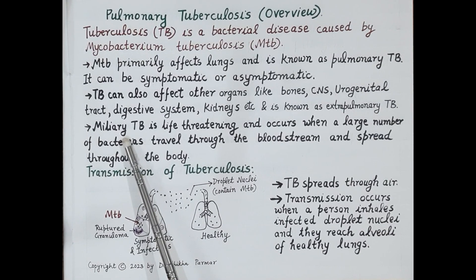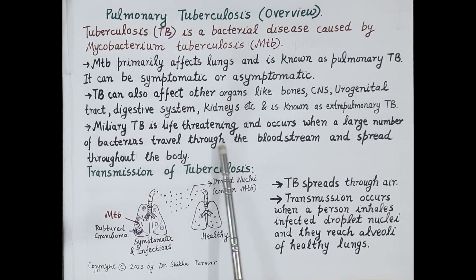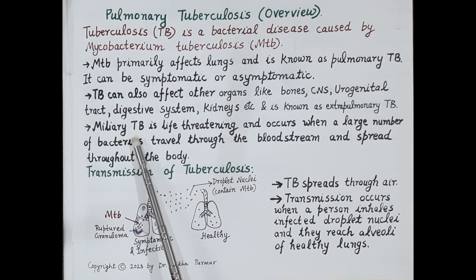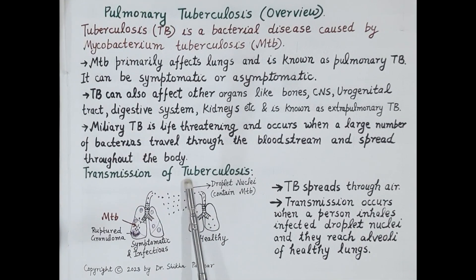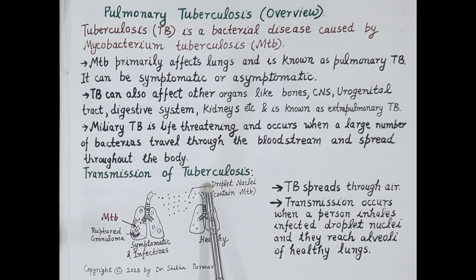In miliary TB, millet-sized tuberculosis lesions are seen in all the organs of the body. It occurs when a large number of tubercle bacilli reach the blood and travel through the bloodstream, spreading the bacilli throughout the body, resulting in miliary tuberculosis.